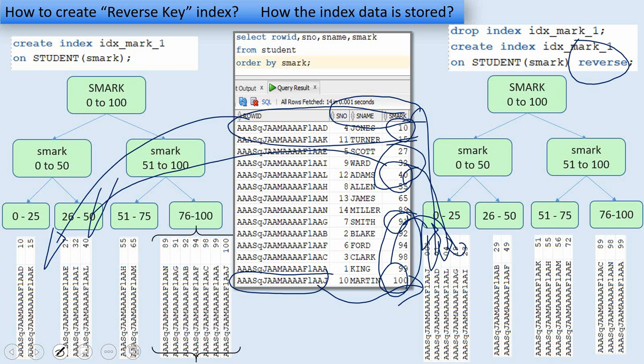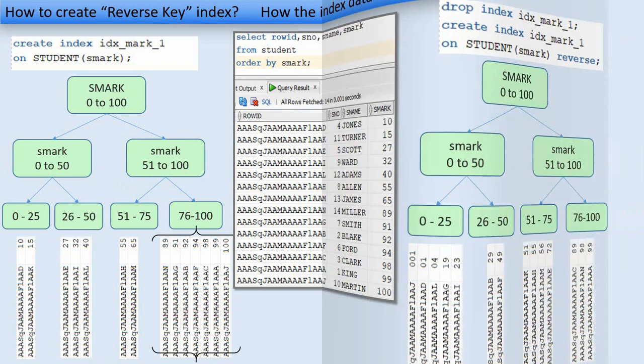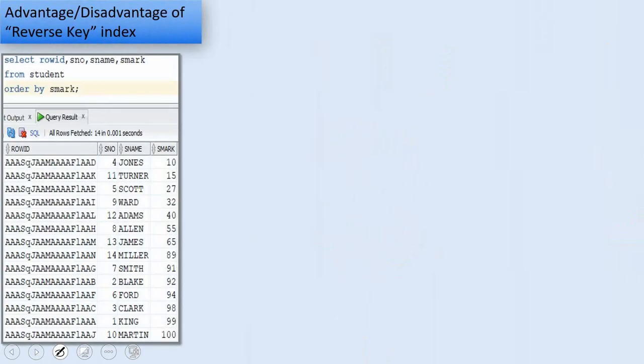So this is the problem which reverse key index is trying to resolve. Fine, reverse key solved the index block contention, but this brings a disadvantage as well. It's better if you understand this because these are the key things normally in an interview people will expect you to answer. So we'll try to understand the B-tree scan in comparison with the reverse key scan.